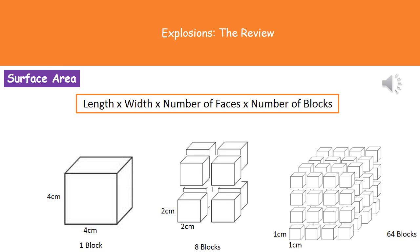Next we need to understand what surface area actually is — a term you may have come across in maths, but we're going to recap how to calculate it here. The calculation is length times width times the number of faces times the number of blocks. Starting on the left of our diagram, we've got one block with four centimeter sides, giving a surface area of 96 centimeters squared.